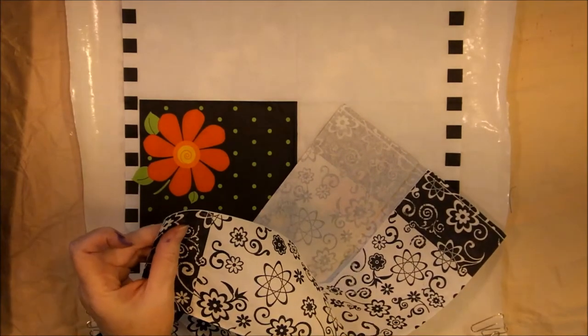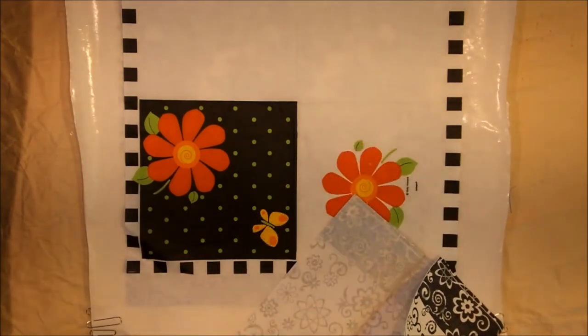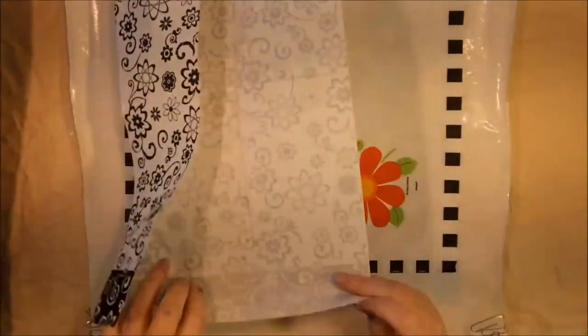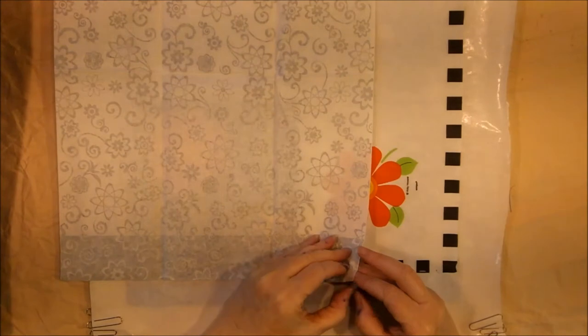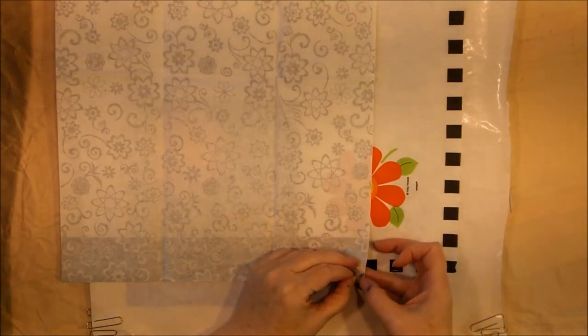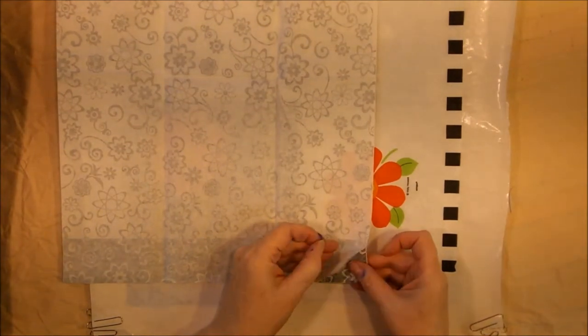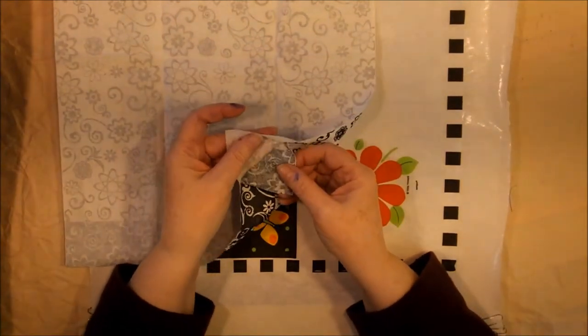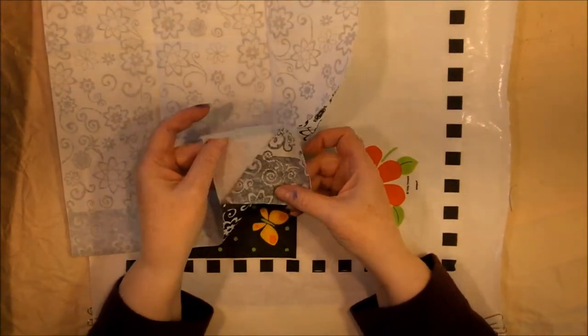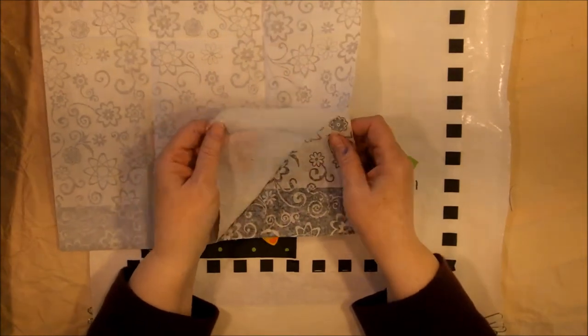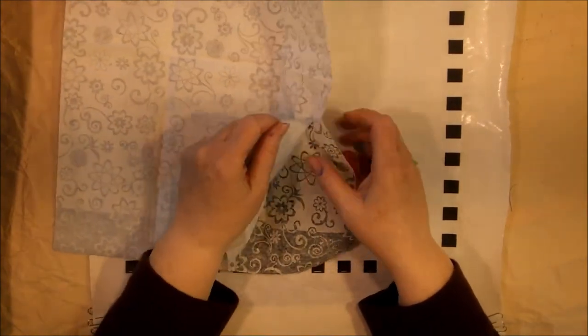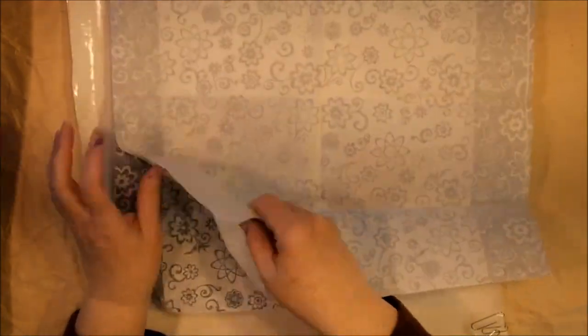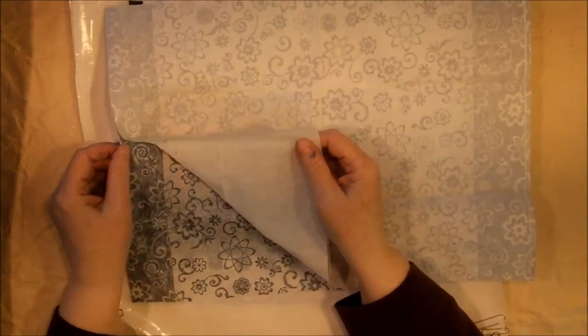Excuse me, just a second, let me get that corner started. Now this is an inexpensive dollar store napkin, so there's only two layers instead of three, but sometimes there are three layers and you just pull these sheets apart until you have a single layer.